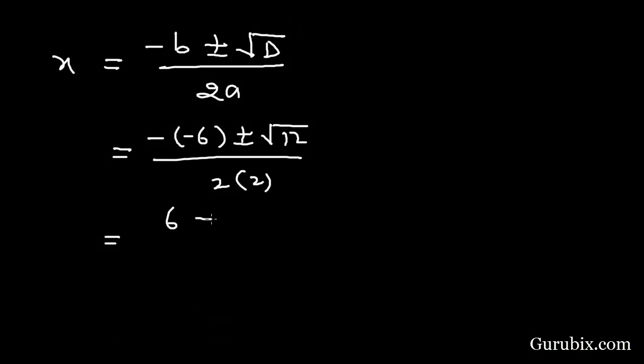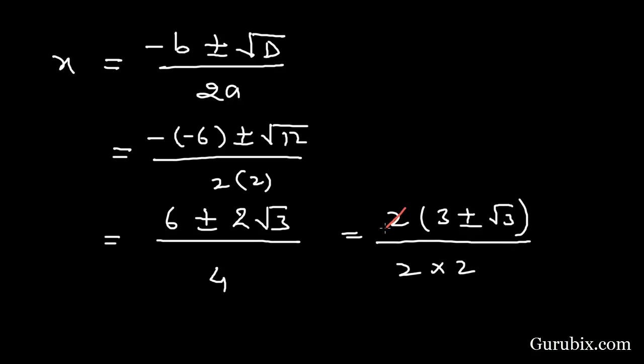This is 6 ± 2√3 over 4. We shall take 2 common from the numerator, then this equals 2(3 ± √3) over 2 × 2. The 2s cancel.